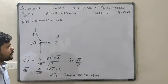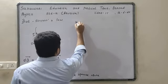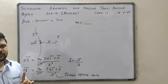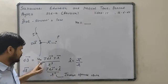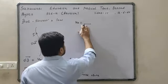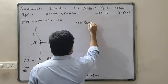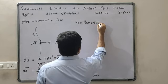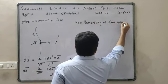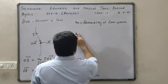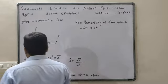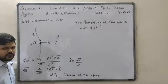Let us explain all the terms in this formula. First is μ₀. What is μ₀? That is the permeability of vacuum or free space. Its value is 4π × 10 raised to minus 7, in SI units.